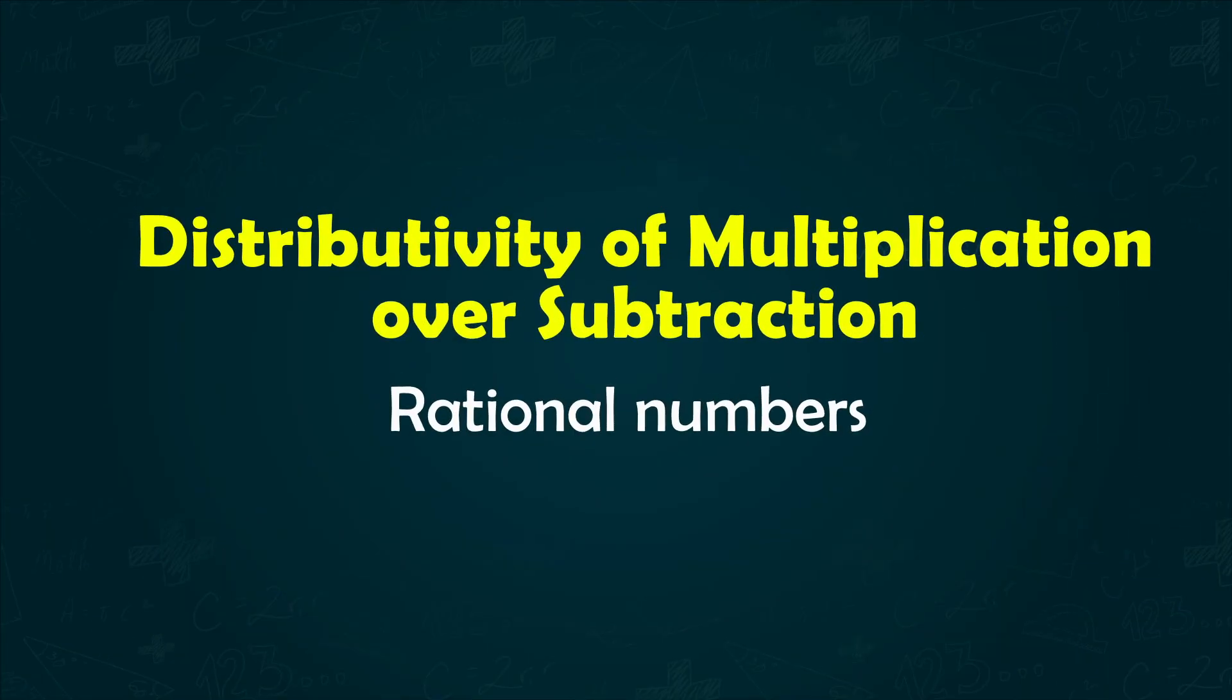Rational numbers also follow distributive property of multiplication over subtraction. That is,